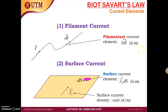Next, we have the surface current. Imagine a thin surface that conducts a current on its surface. We have the surface current density Js with a unit of ampere per meter. The surface current element is written as Js·dS, where Js is a vector and dS is a scalar. For filamentary current, i is scalar and dl is a vector — the unit is the same: ampere·meter.